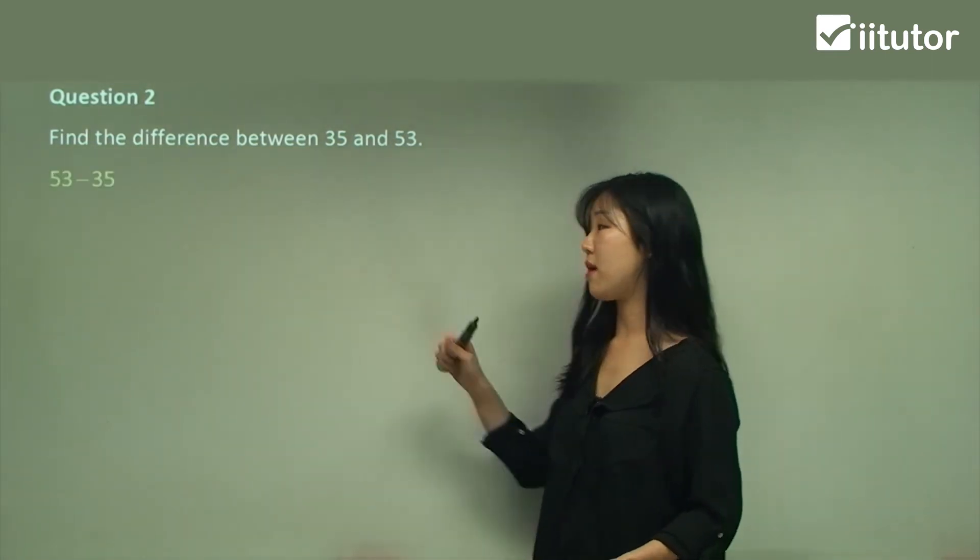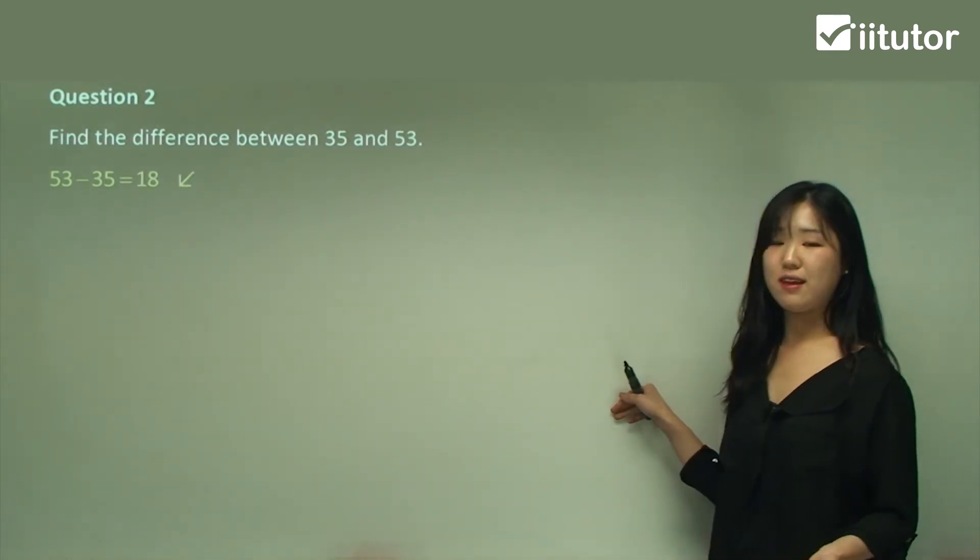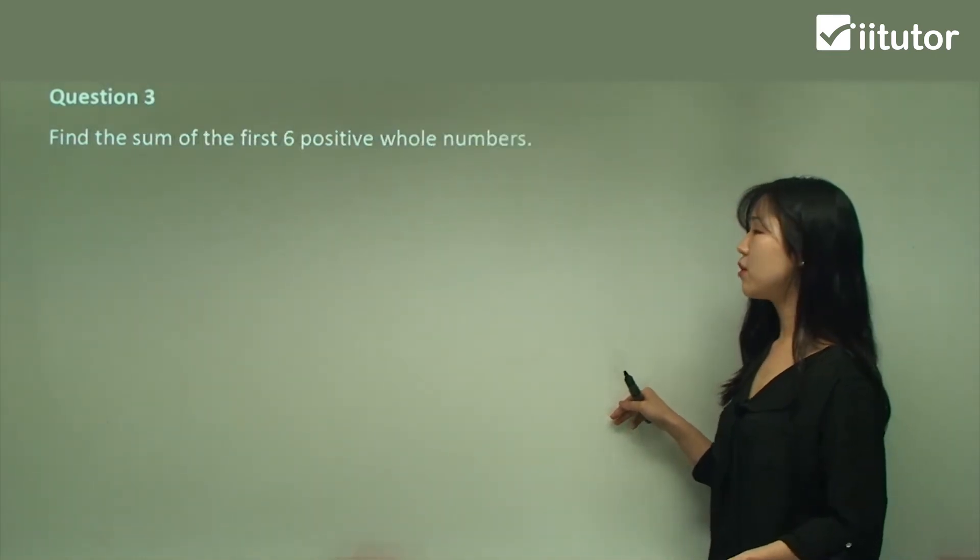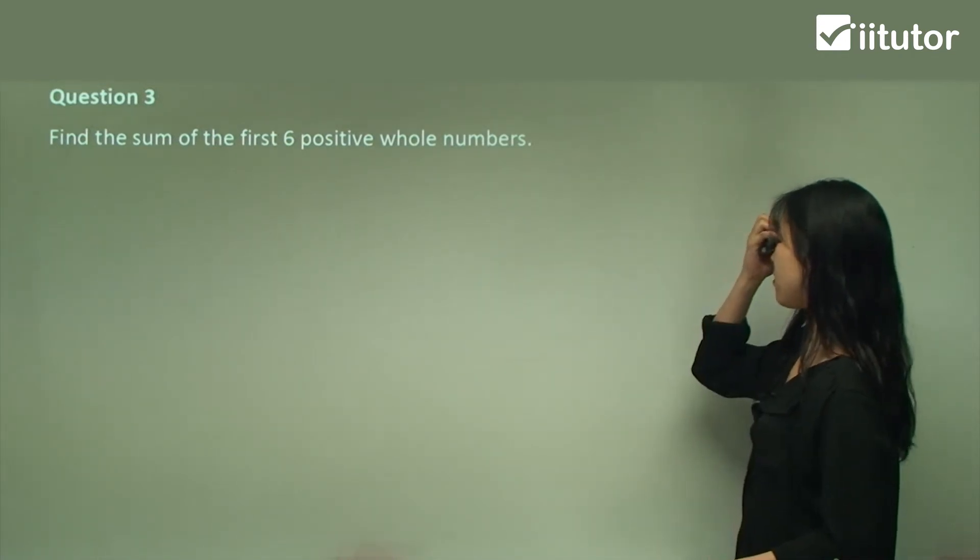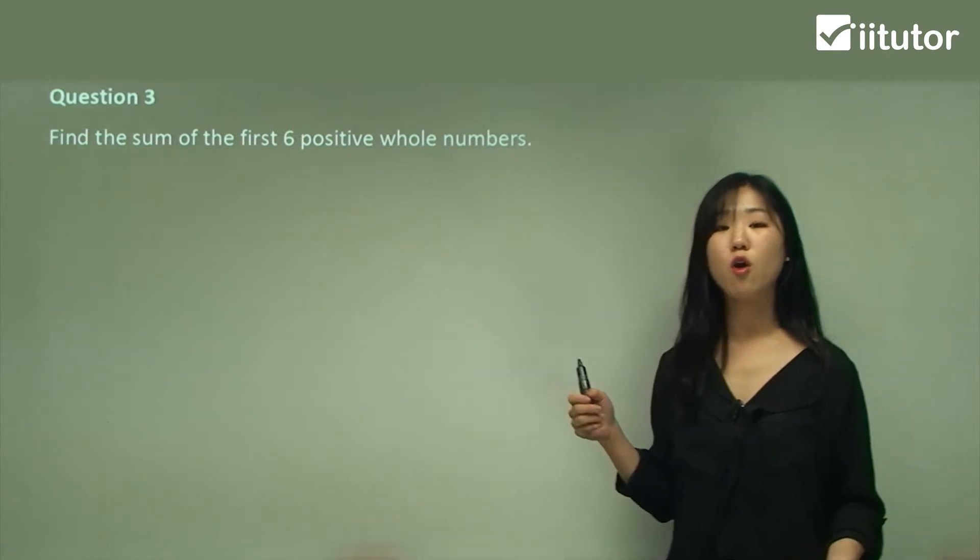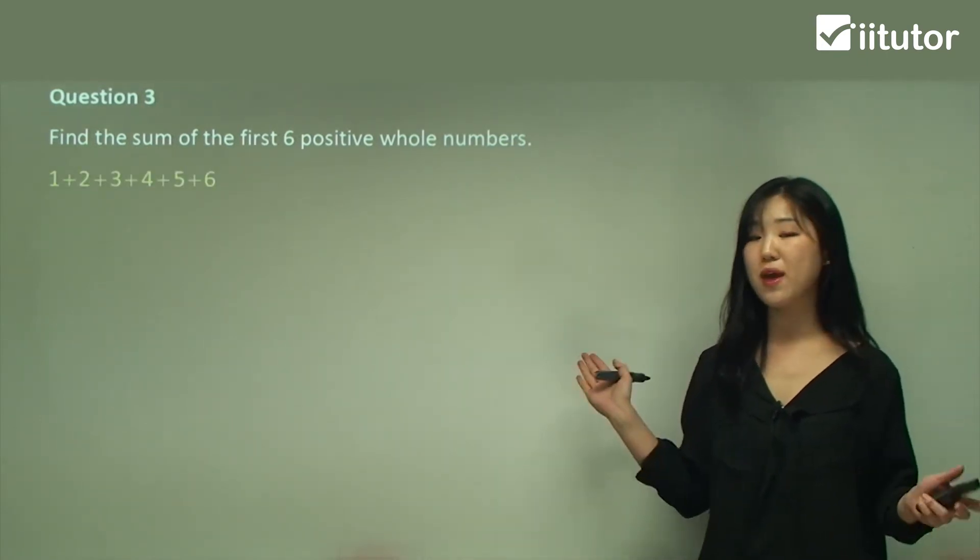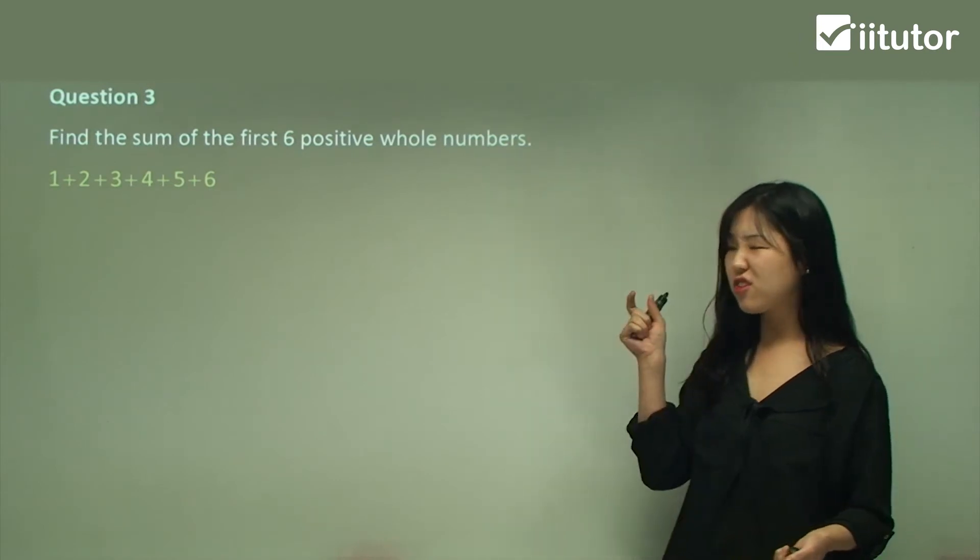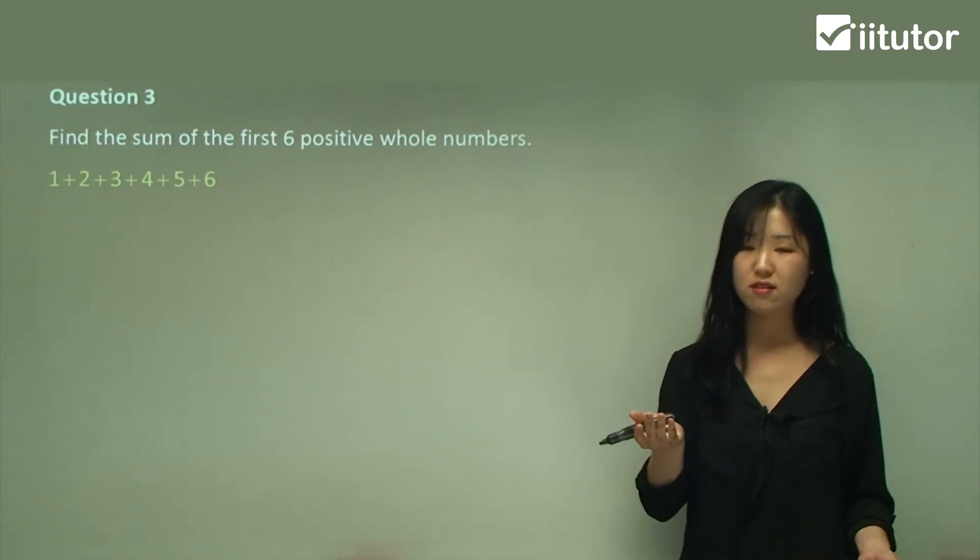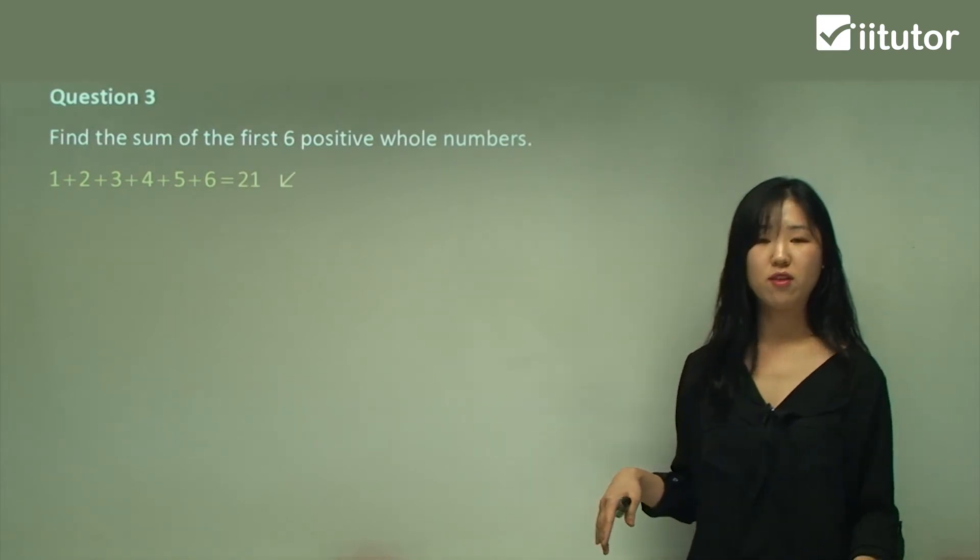Question three: find the sum of the first six positive whole numbers. So six positive whole numbers are one, two, three, four, five, and six. We add them all up. If you like, you can just do two things at a time or three things at a time, up to you, whatever's comfortable. I just found that it's 21. I just added it up.